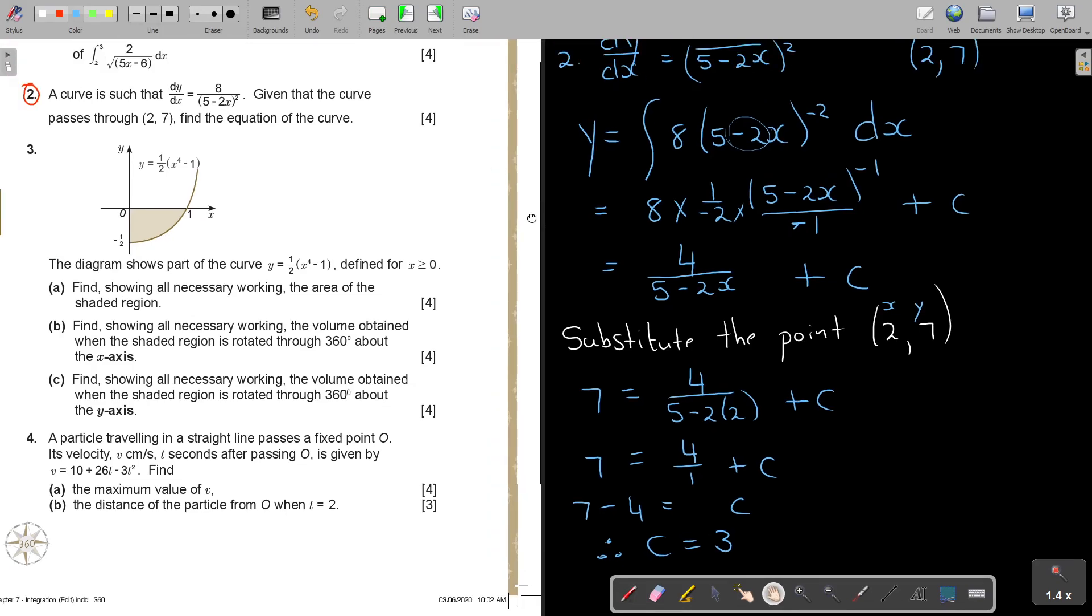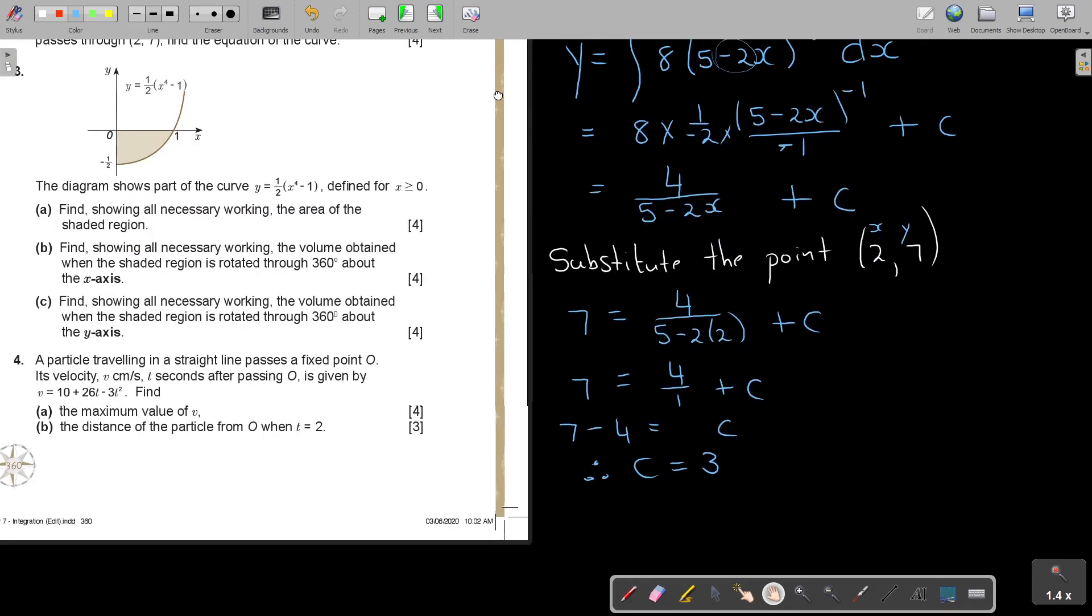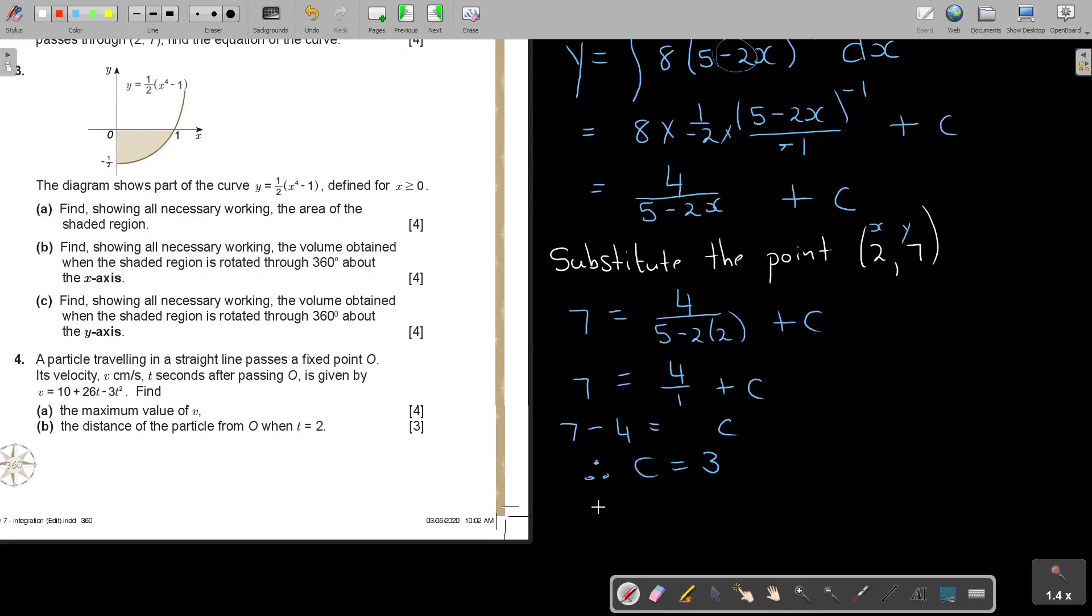But don't stop there. Go to the question. They say, find the equation of the curve. You have to end by saying, therefore, y is equal to 4 over (5 minus 2x) plus 3. And that is how you must end.